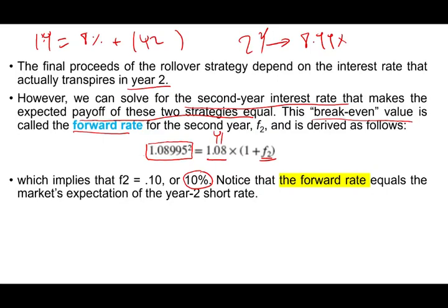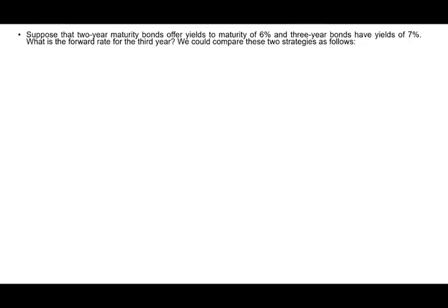Based on the two-year bond, we were able to find the rollover rate, or forward rate. Let's take a look at another example. Suppose a two-year maturity bond offers a yield to maturity of 6%, and the three-year bond has a yield of 7%. So we have one bond offering 7% for three years, and one offering 6% for two years, and we don't know the third-year rate.